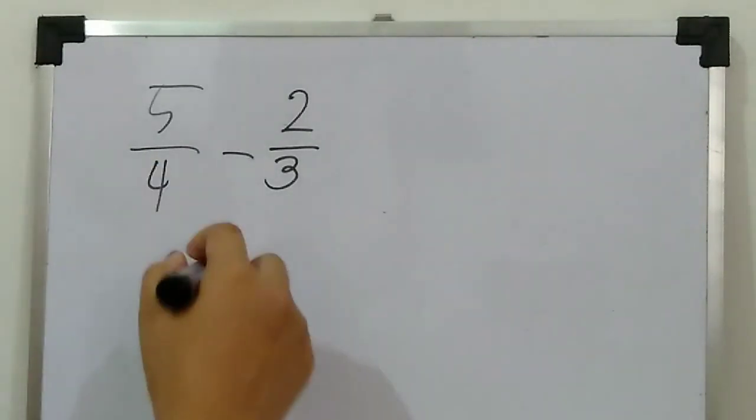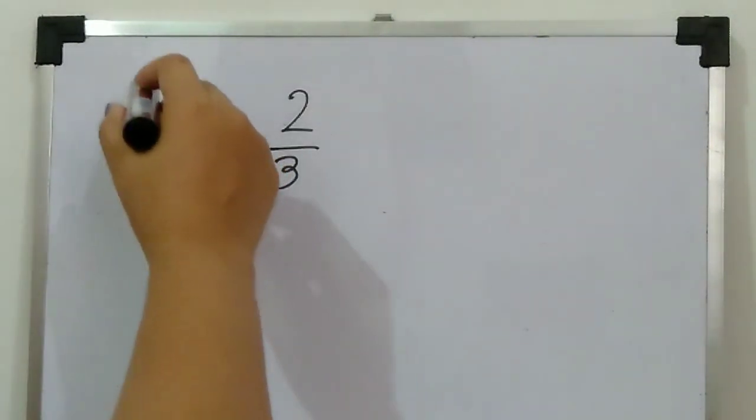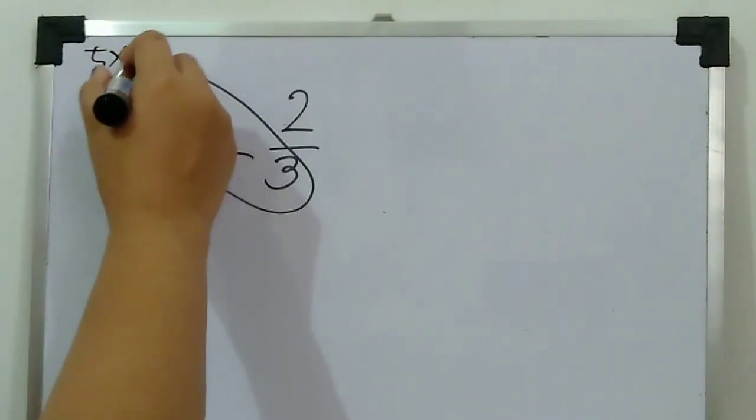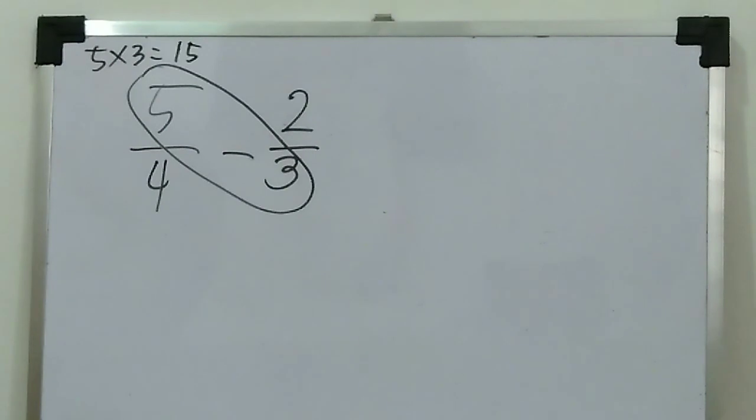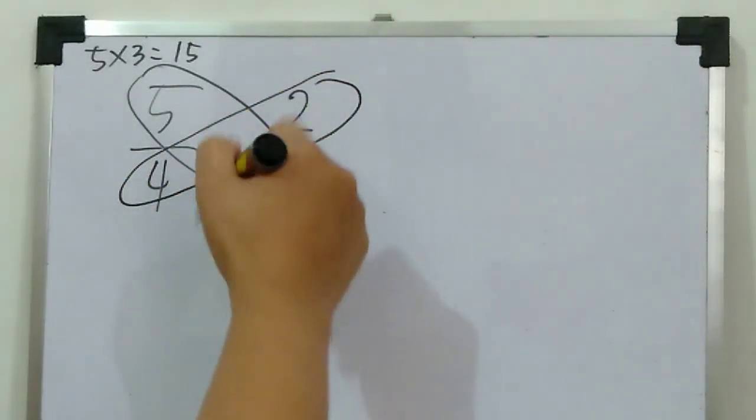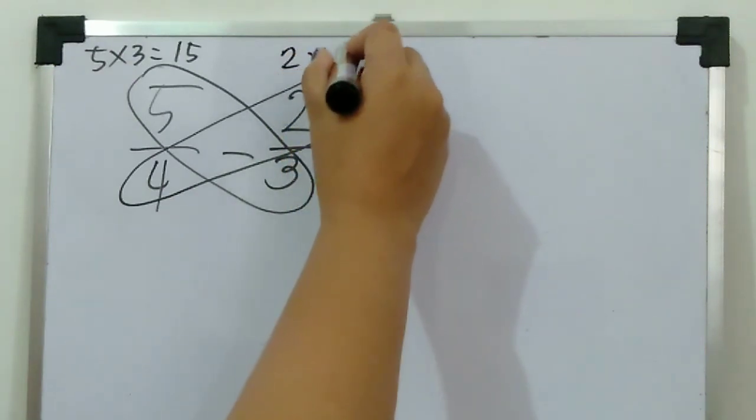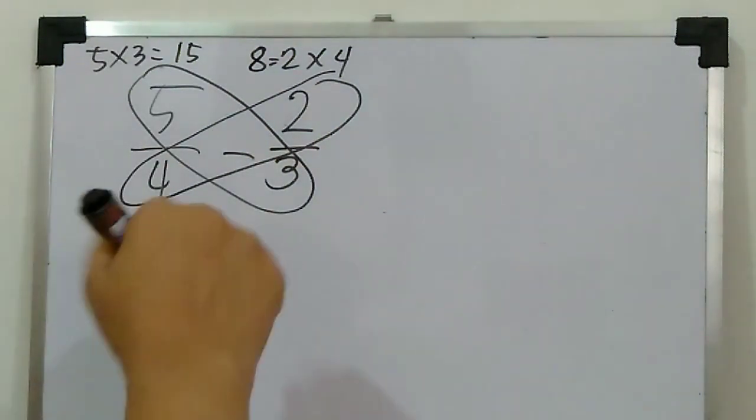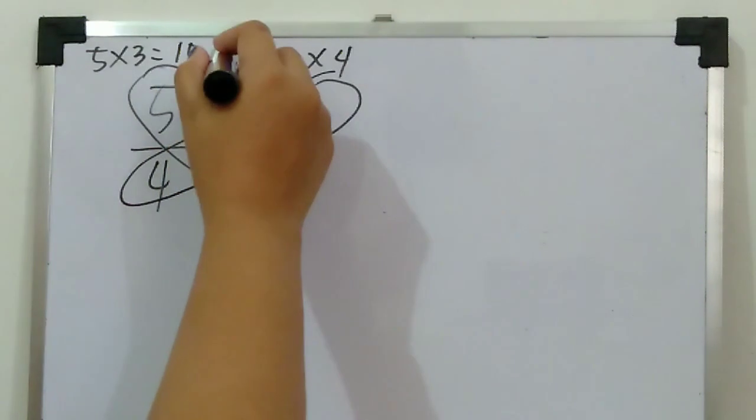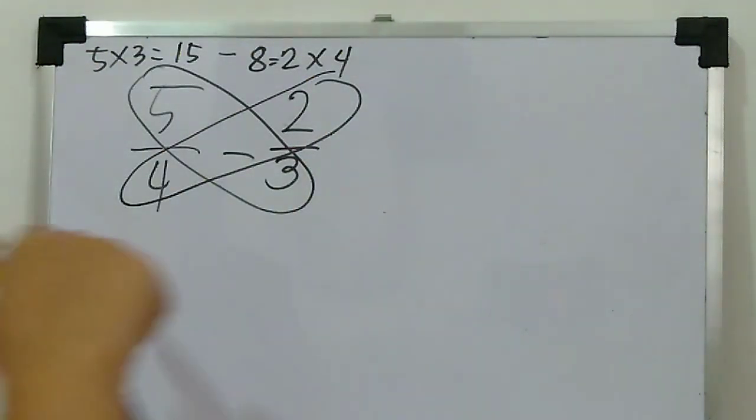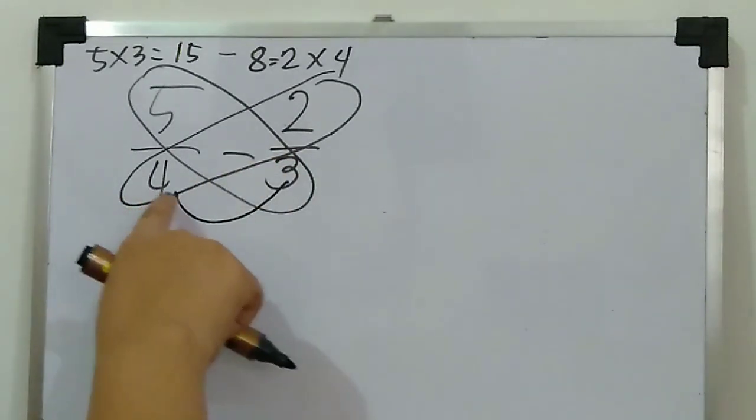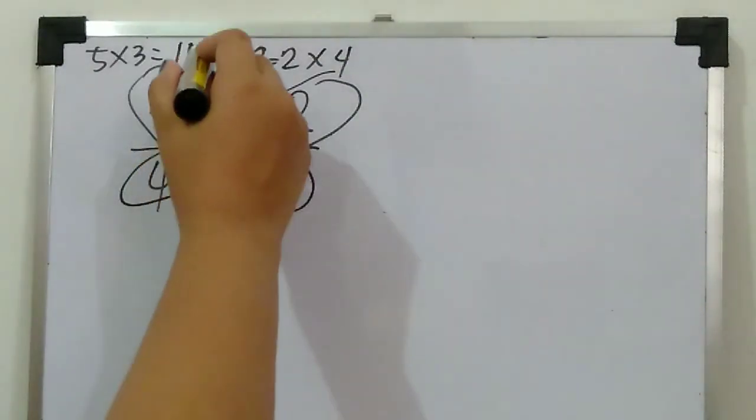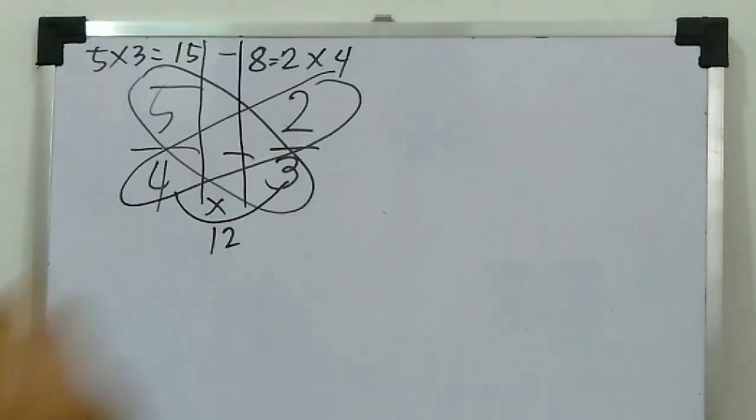So first step is cross multiply. Five times three equals fifteen. Next, two times four equals eight. What is the operation? The operation is minus, so put minus in the middle. Then multiply: four times three, what is the answer? Twelve.